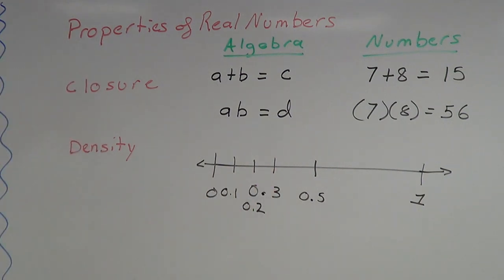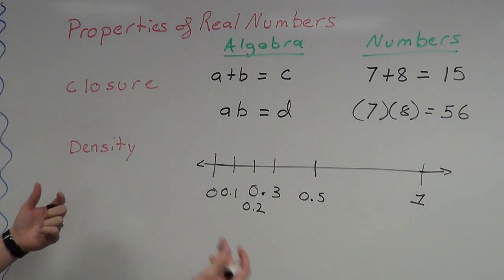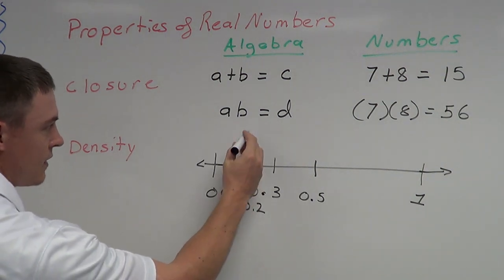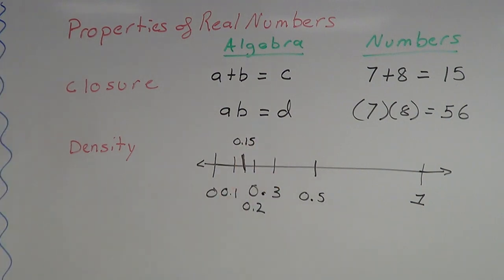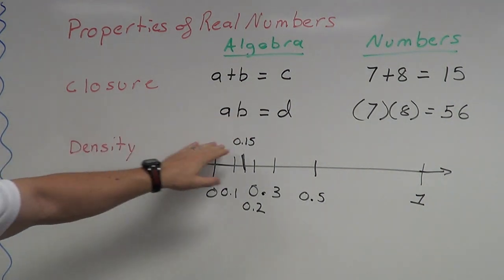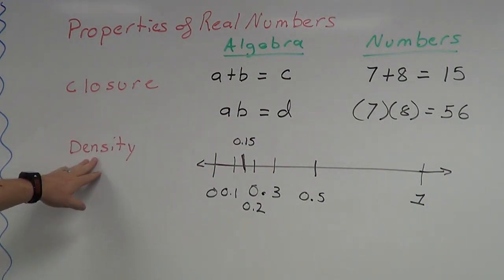Between 0.1 and 0.2, I can choose 0.15 — and I can just keep going. That's the density property: if I have any two real numbers, there's always another real number in between them. Those are the two last properties for real numbers: the closure property of addition, the closure property of multiplication, and the density property.